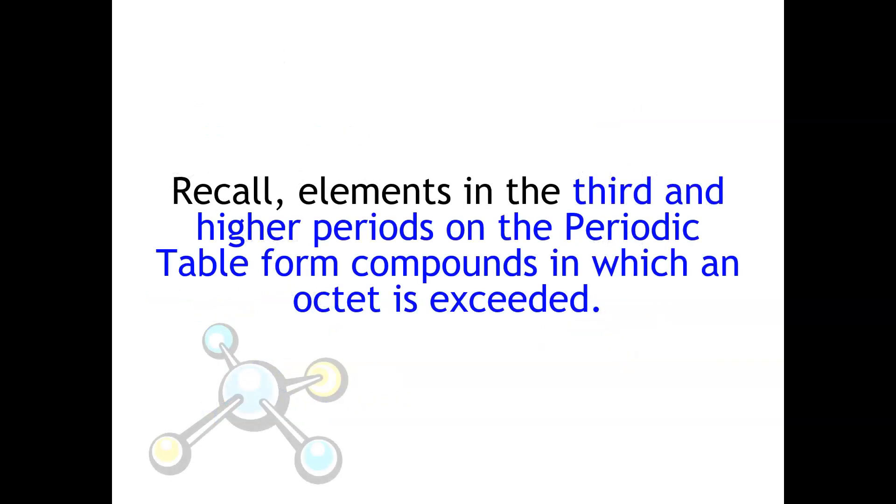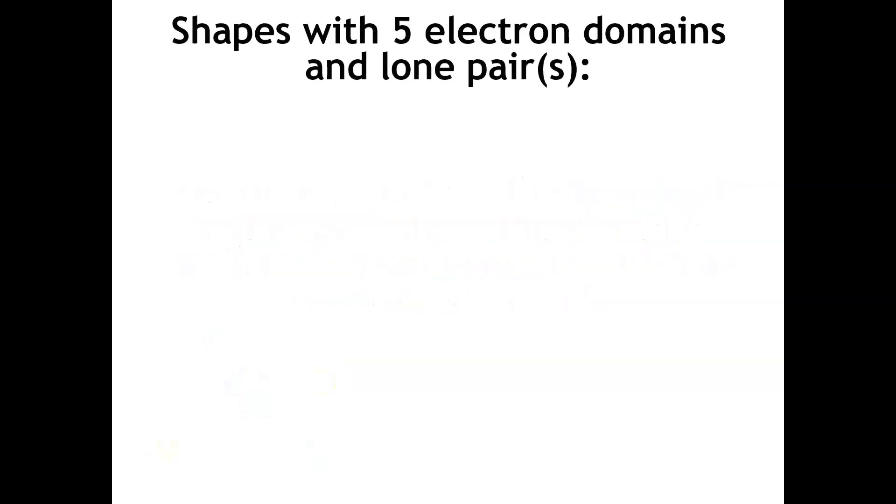Recall that elements in the third period and higher can form compounds in which your octet is exceeded. Now we can get into those interesting shapes where we have five electron domains or six electron domains, and we've substituted some unshared pairs on those central atoms.